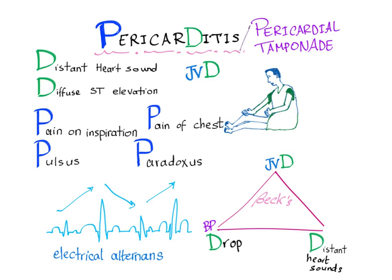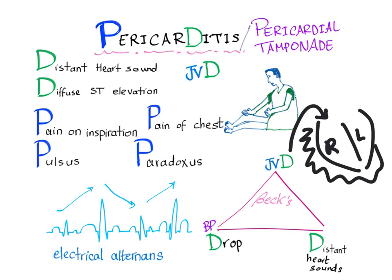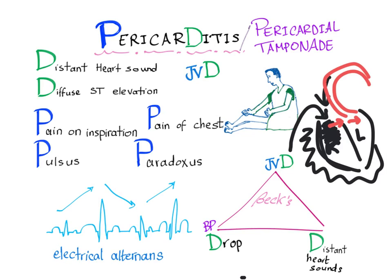And pulsus paradoxus — what's pulsus paradoxus? It's a decrease in systolic pressure of more than 10 mmHg on inspiration. There is a mechanism for that: if we have the heart with the right and left ventricles, and there is fluid surrounding the heart, the venous return from the superior and inferior vena cava occurs during inspiration. With this fluid surrounding the heart, the ventricle cannot relax, so blood builds up and pushes on the septum to the left side. The left ventricle decreases in size, so blood flowing through the aorta is less than usual, making systolic pressure less than usual by 10 mmHg or more. That's the reason for pulsus paradoxus.